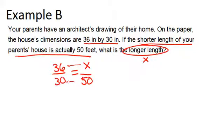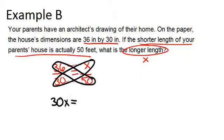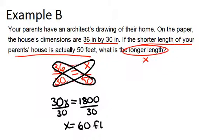Now, we can solve this by cross multiplying. So we're going to multiply 36 by 50 and 30 by x. And we get 30x equals 1,800. Divide both sides by 30 and get x equals 60. So that means the longer length of the actual house is 60 feet.